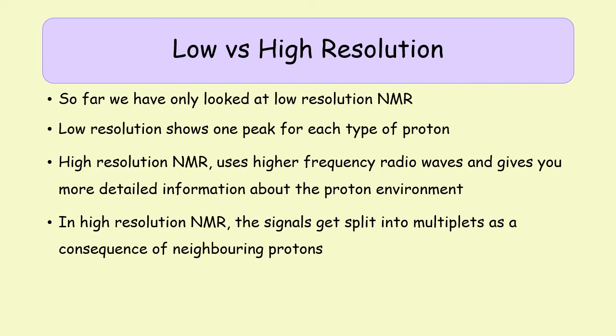Every spectrum we've looked at so far has been low resolution NMR, which shows only one peak for each proton type. If you use high resolution NMR — which uses higher frequency radio waves and a larger external magnetic field — you can get much more detailed information. Low resolution tells you about the individual environment a proton is in, but high resolution actually tells you about what groups are beside other groups. It allows a signal to be split based on how many protons are neighboring it.